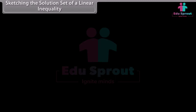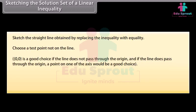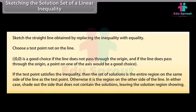Sketching the solution set of a linear inequality. Sketch the straight line obtained by replacing the inequality with equality. Choose a test point not on the line — (0,0) is a good choice if the line does not pass through the origin; if the line passes through the origin, a point on one of the axes would be a good choice. If the test point satisfies the inequality, then the solution set is the entire region on the same side of the line as the test point; otherwise it is the region on the other side. Shade out the side that does not contain the solutions, leaving the solution region showing.